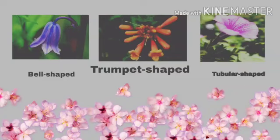Second one: trumpet-shaped. Trumpet is a musical instrument. In this, the petals are just in the shape of a trumpet. Third one: tubular shape. As the name suggests, the flower looks like different tubes — it looks like many tubes are joined together.